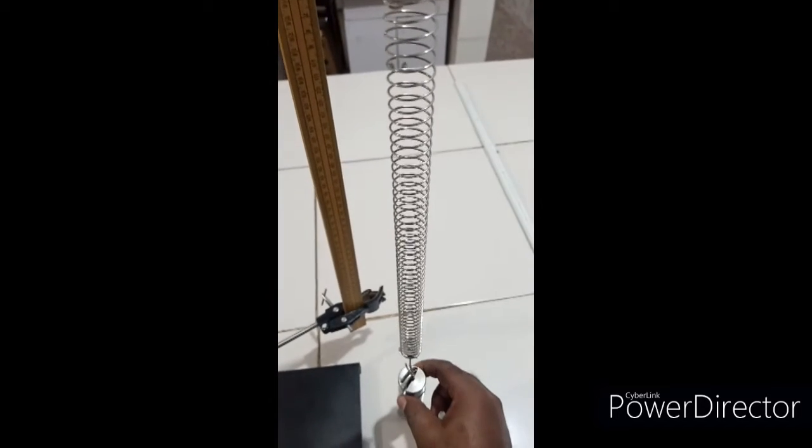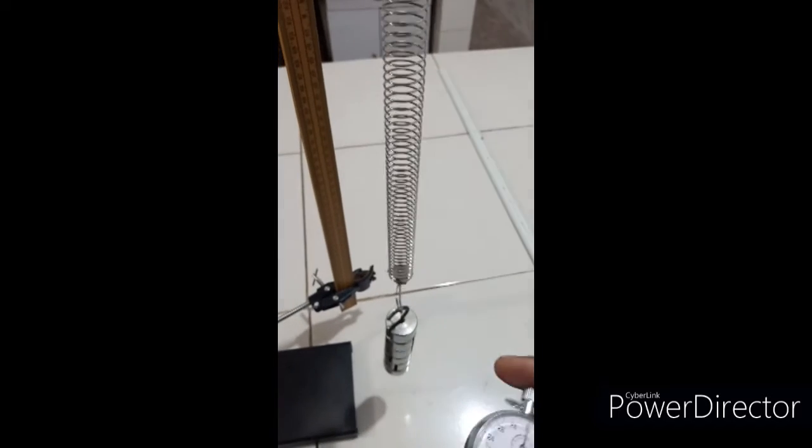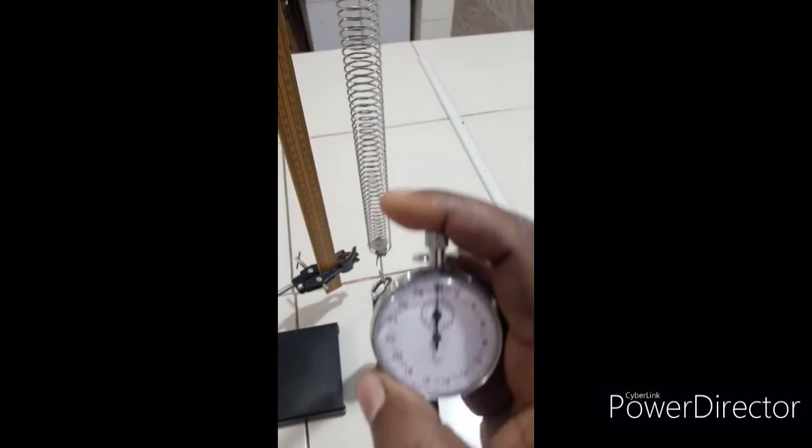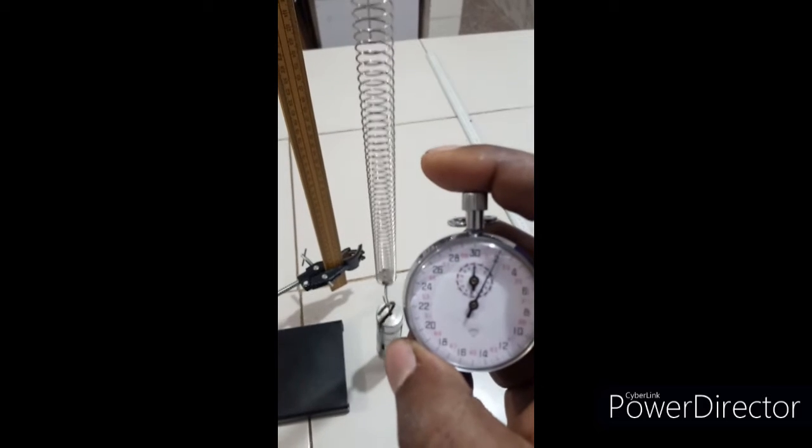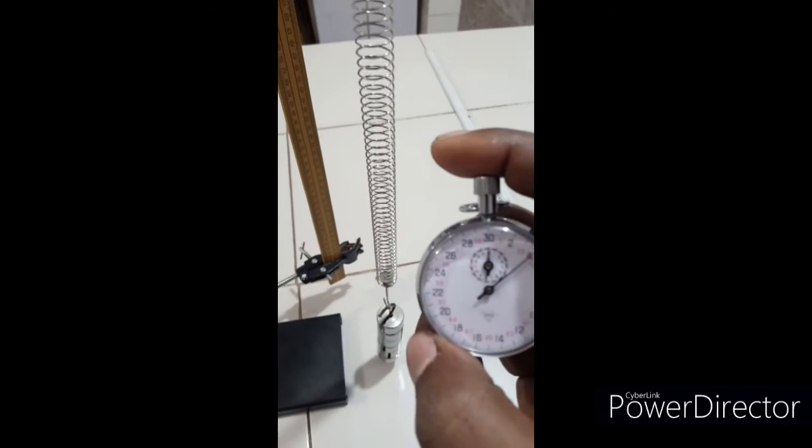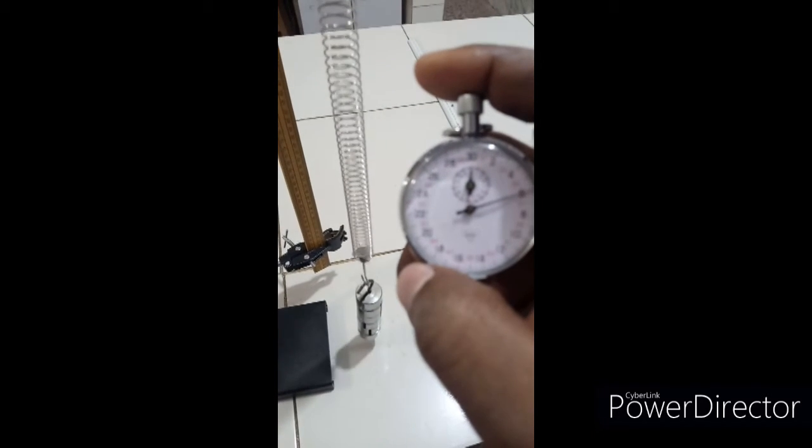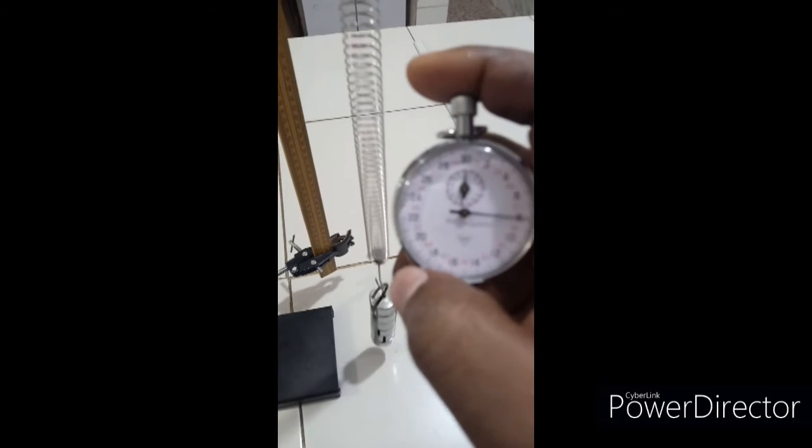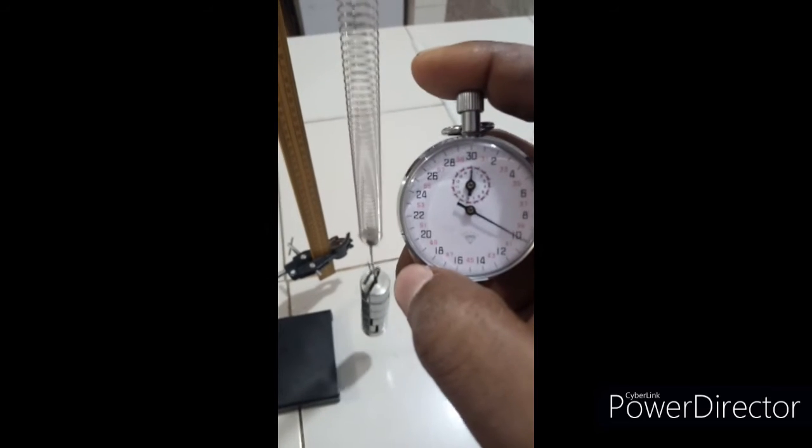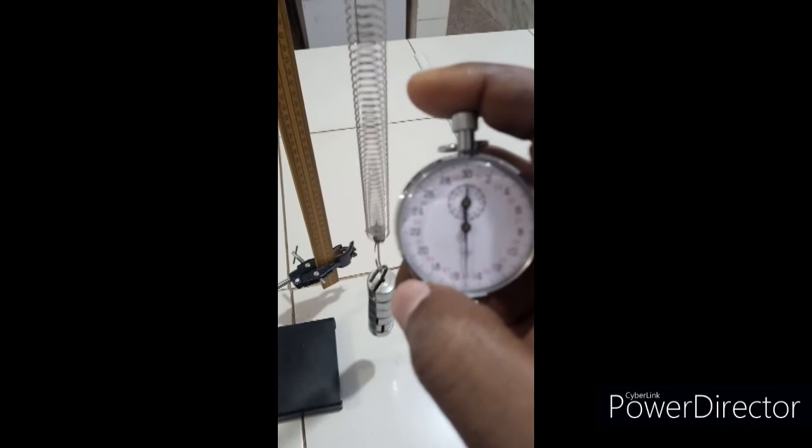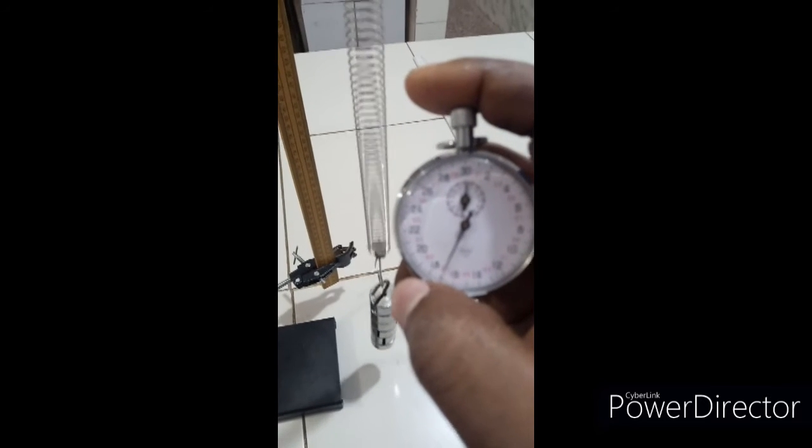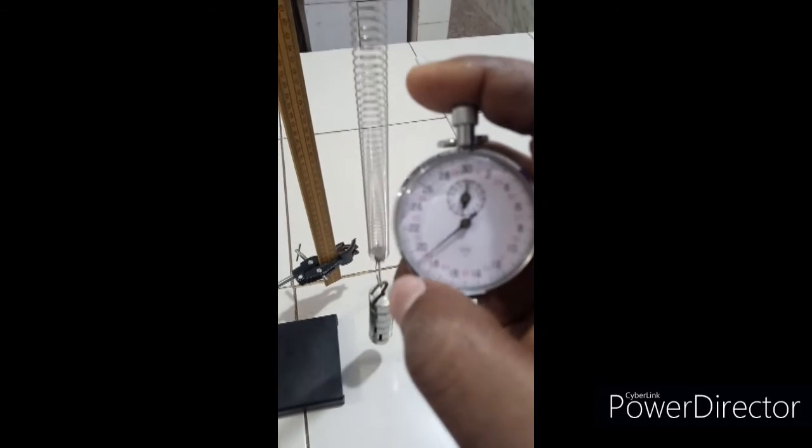So for 20 vertical oscillations, let's go. I take my stopwatch, I'm ready to go. 1, 2, 3, 4, 5, 6, 7, 8, 9, 10, 11, 12, 13, 14, 15, 16, 17, 18, 19, 20.